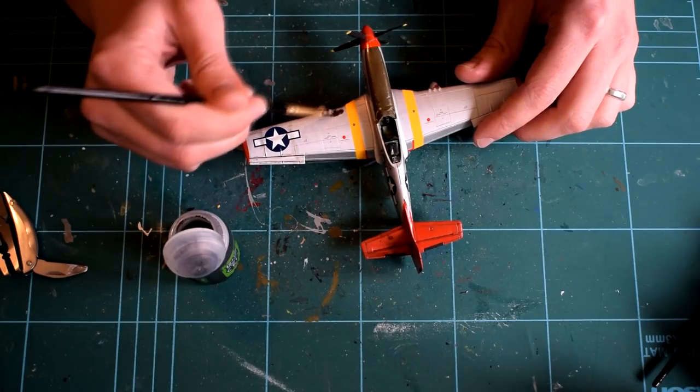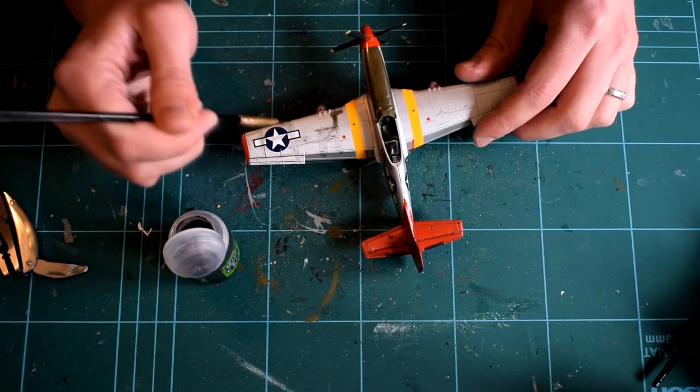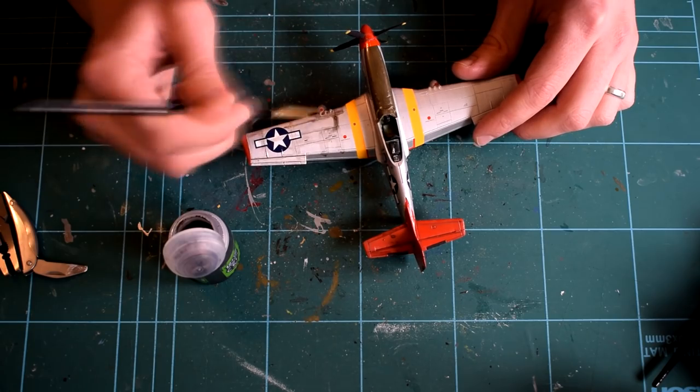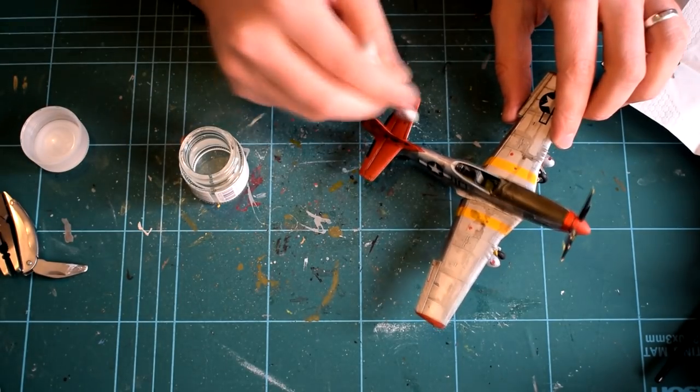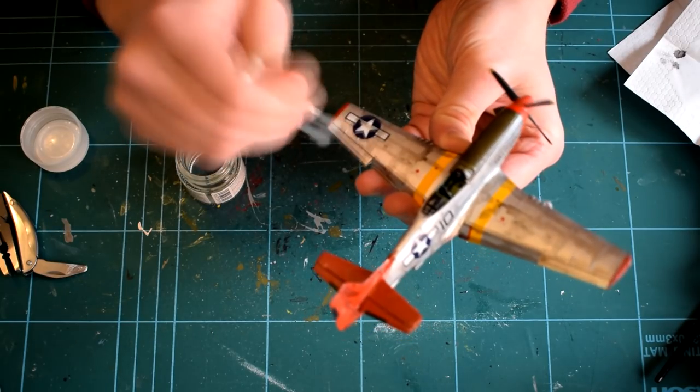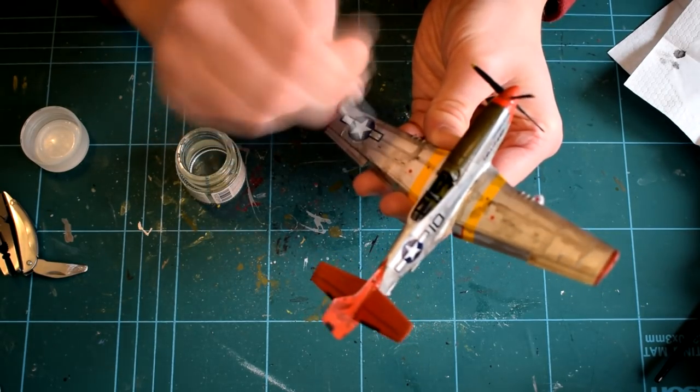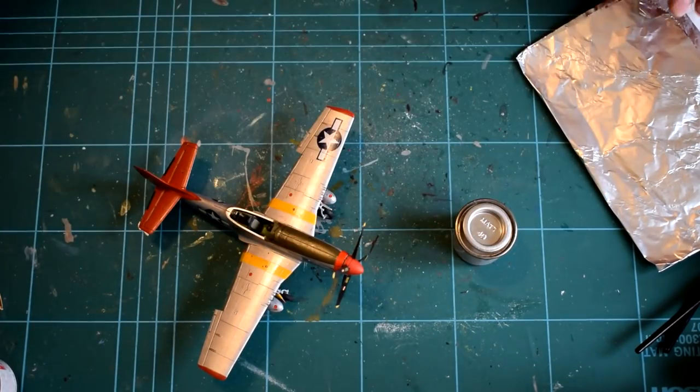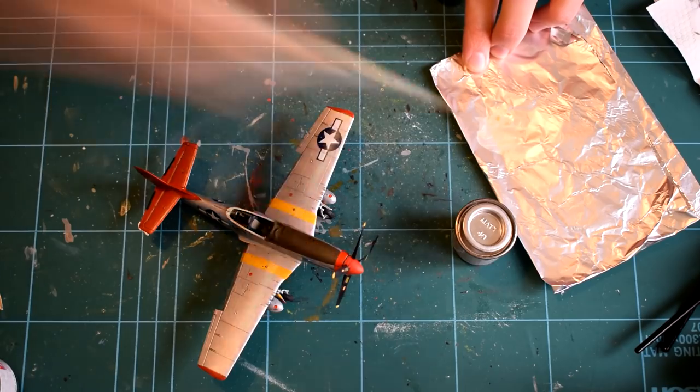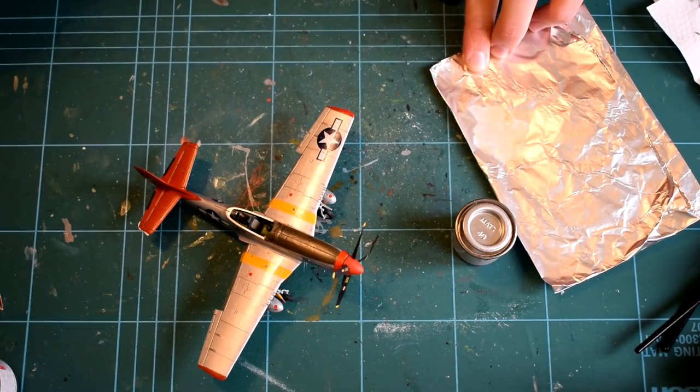Citadel Nuln Oil was applied to the kit in order to highlight and emphasise the recessed details and panel lines. Some acrylic thinners were then wiped across the model in the direction of airflow on a cotton bud, in order to remove the excess wash. When that had dried, Humbrol matte varnish number 49 enamel was painted over the areas of the model that required it. These being the red areas, the olive green nose and the propeller blades.